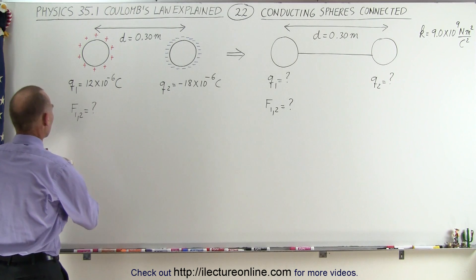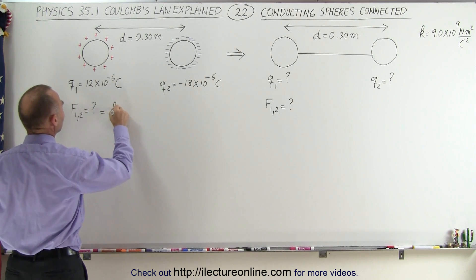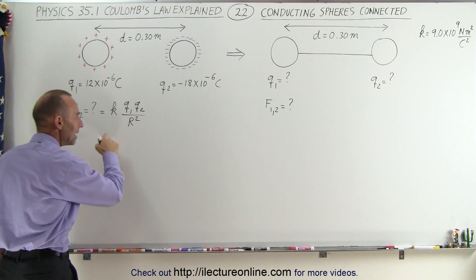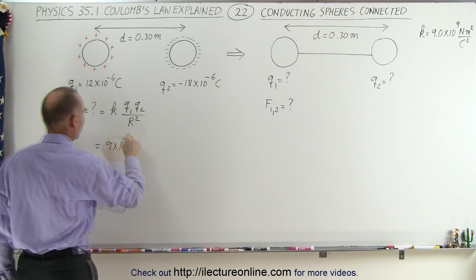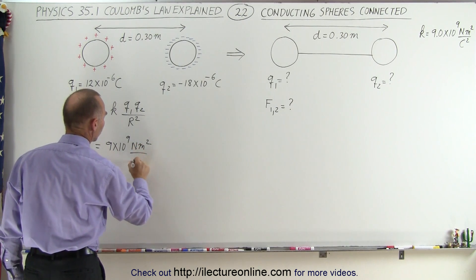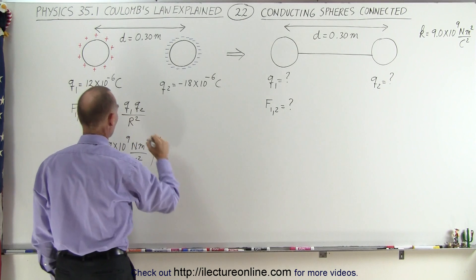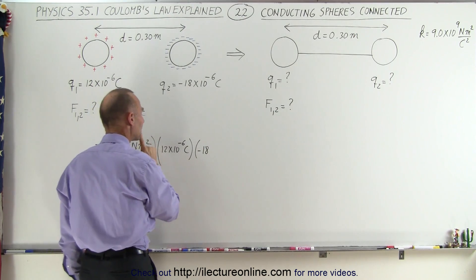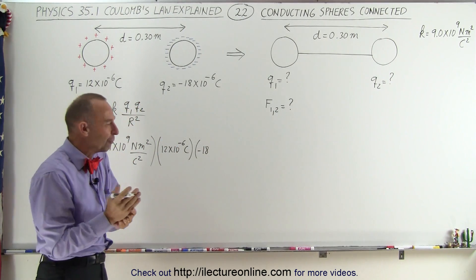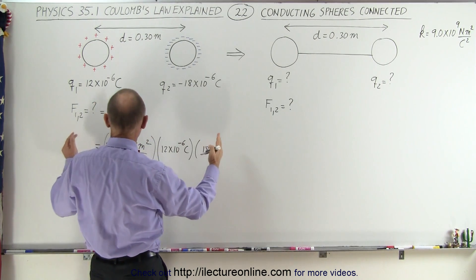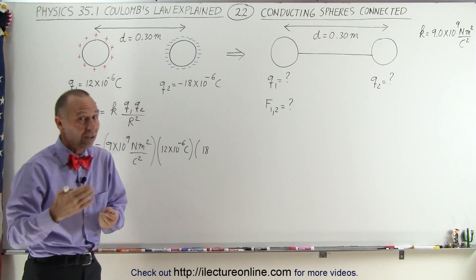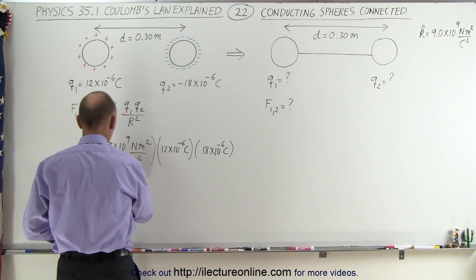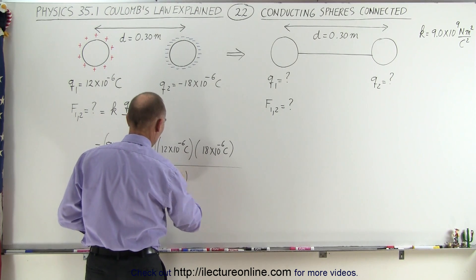So here we're going to use Coulomb's Law, where the force is equal to k times q1 times q2, divided by the distance between them squared. In this case, k, the constant, is 9 times 10 to the 9th newton meters squared per coulomb squared, multiplied by the two charges: 12 times 10 to the minus 6 coulombs and 18 times 10 to the minus 6 coulombs. Since we're finding the magnitude of the force, we don't need to use the negative sign — we're simply finding the magnitude. All divided by the distance, 0.3 meters, squared.